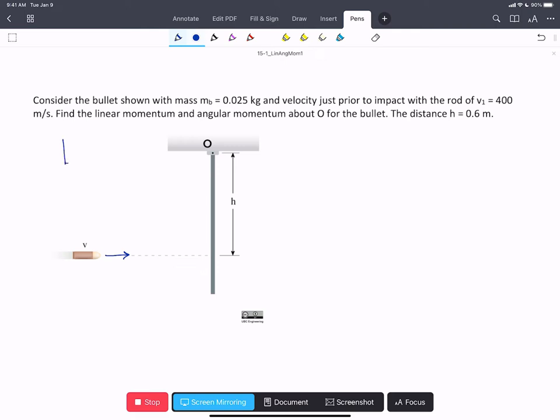We're going to add our axes in here. We'll note that the bullet is a point mass. It doesn't really have any extent.